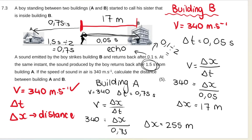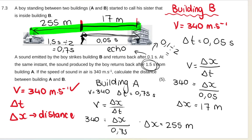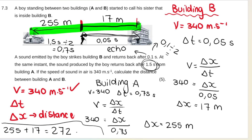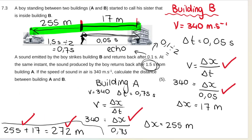The distance from the boy to building A is 255 meters. Adding both distances: 255 plus 17 equals 272 meters. Marks are awarded for the formula used, substituting for building B, substituting for building A, for adding, and the final answer - that is 5 marks.